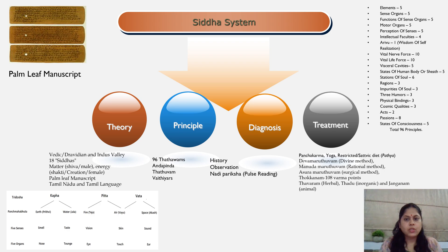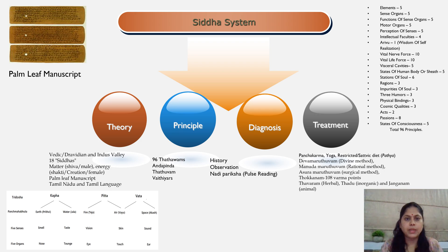Based on the diagnosis, treatments are offered, including Panchakarma, Yoga, and a restricted Sattvic diet called Pathya. Increased Vata dosha shows arrogant behavior and paralysis; increased Pitta shows graying of hair, anemia, and instability. Siddha medicines are divided into three categories: Thavaram (herbal), Thadu (inorganic), and Janganam (animal). Internal as well as external medicines are divided into 32 categories each. Pressure or massage techniques are also part of treatment, called Thokkanam, with about 108 Varma pressure points.